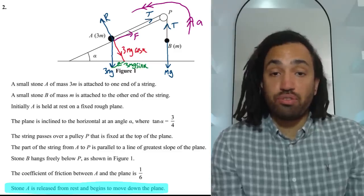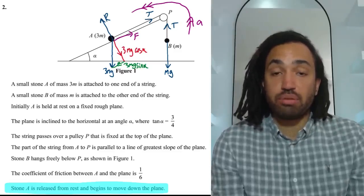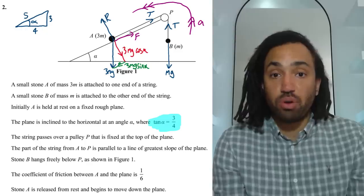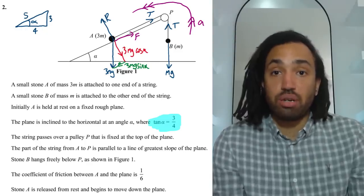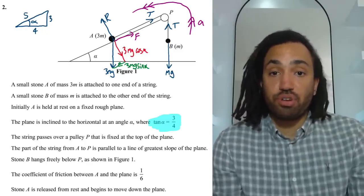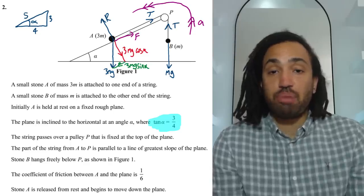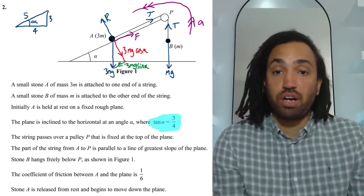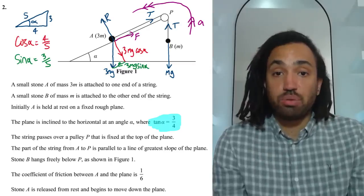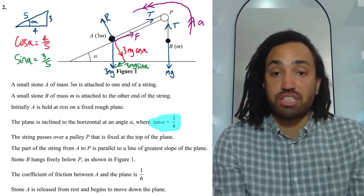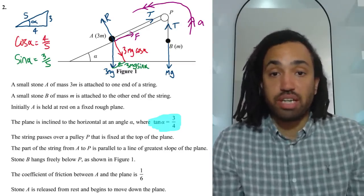Next I would look for the angle alpha. I would read the question and it would tell me that tan alpha is 3 over 4 so I'll draw a quick right angle triangle and I would label the opposite 3 and the adjacent 4 and then by Pythagoras the hypotenuse is 5 and that will tell me what cosine of alpha is equal to and it will tell me what sine of alpha is equal to and I would use those values in the question.